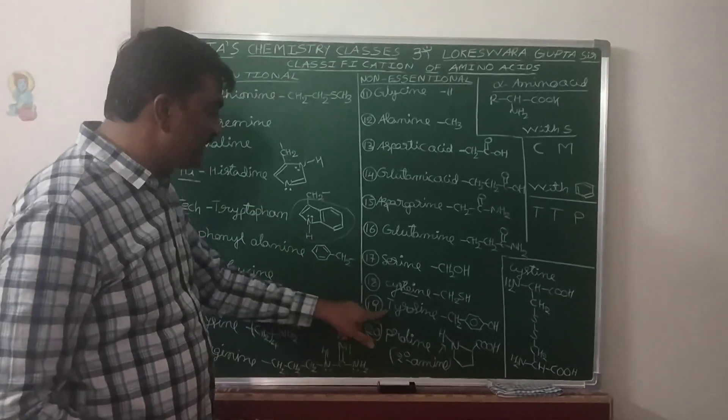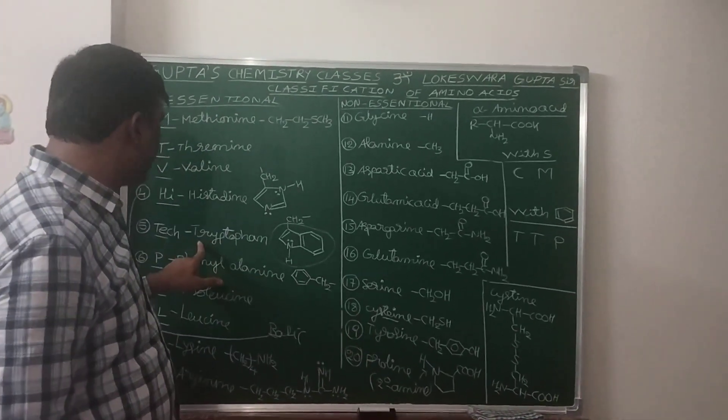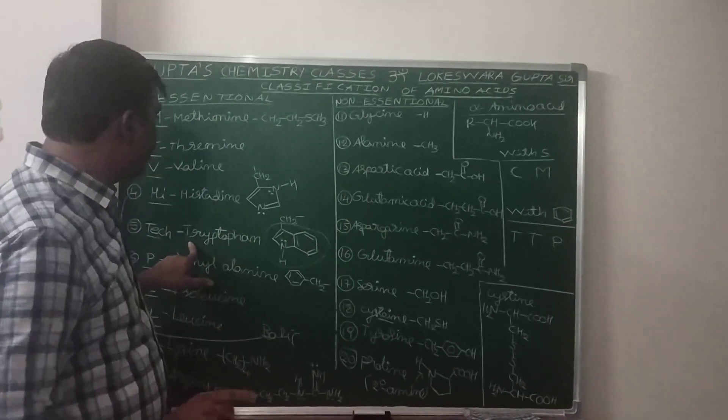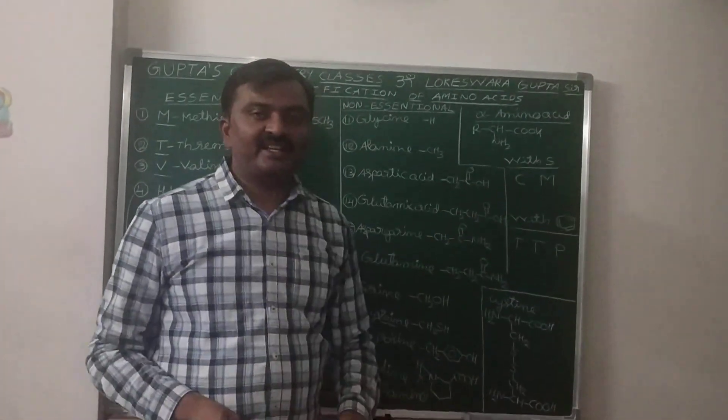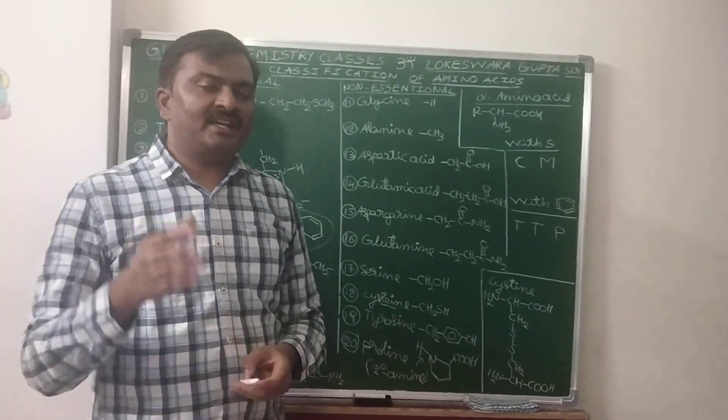So TTP: T - Tyrosine, T - Tryptophan, P - Phenylalanine. But not Threonine. With benzene ring.